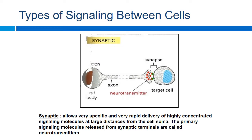The molecules we're releasing into the synapse are called neurotransmitters. Examples include serotonin, acetylcholine, dopamine — which is really important for the addiction pathway and reward system — as well as GABA and glutamate. We'll talk about those as we go along and discuss different neurotransmitters later on in class.